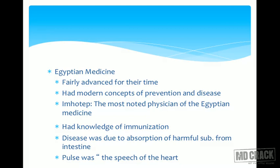The only downfall of Egyptian medicine was that exploration of the body was prohibited and preservation of the body was practiced — the famous art of mummification. This hampered Egyptian medicine because they were not able to dissect anybody. Egyptian medicine prohibited dissection of the human body. However, they were fairly advanced for their time and had modern concepts of prevention and disease.